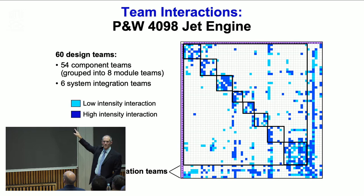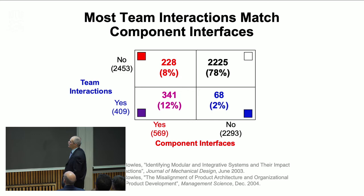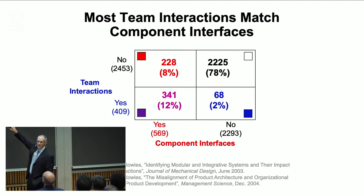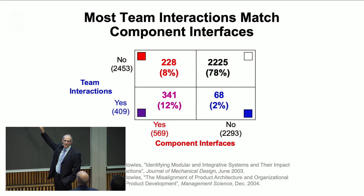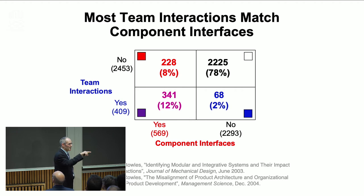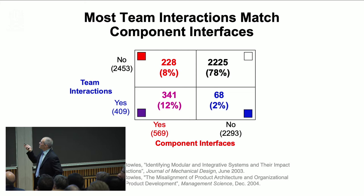The overall answer is: yes, there is similarity. To quantify that — 90% of the cells are either the teams interact where the components have an interface, or there is no interface and the teams don't interact. But the vast majority of those 90% have no interaction — not sure how much credit I can get for those. Here is another way to put it: of the 569 component interfaces in the red matrix, 228 times the teams don't talk to each other — component A has an interface with component B, but team A does not talk to team B.